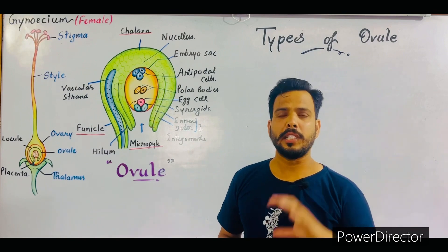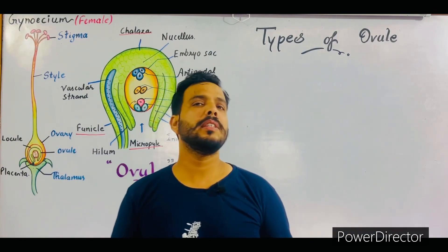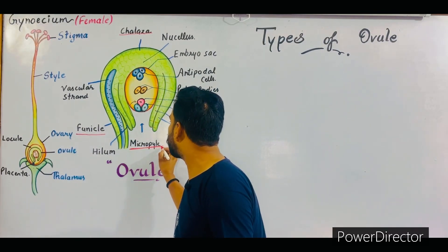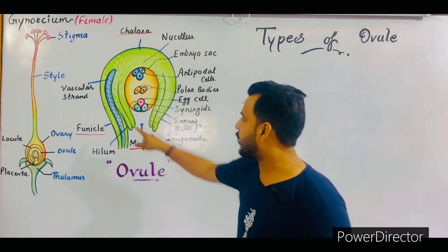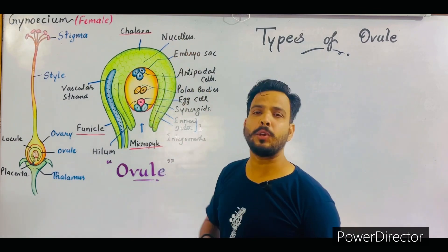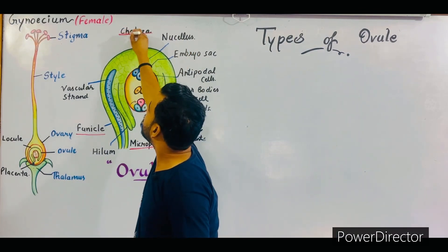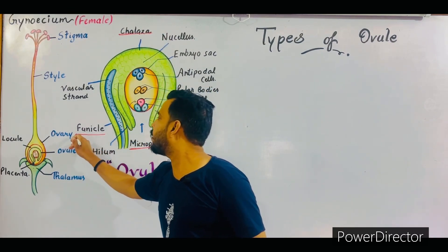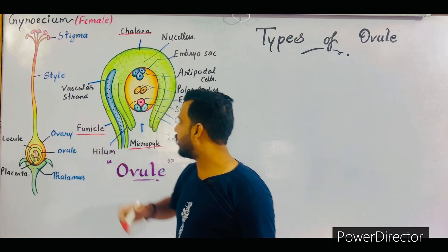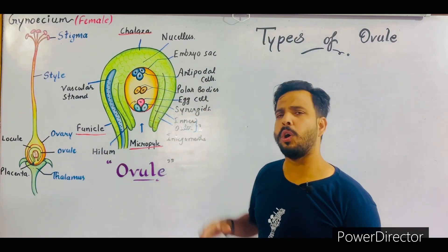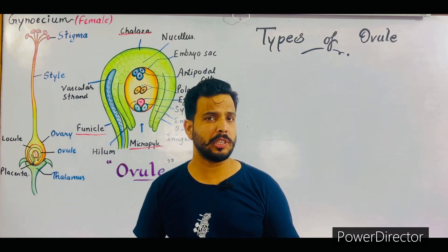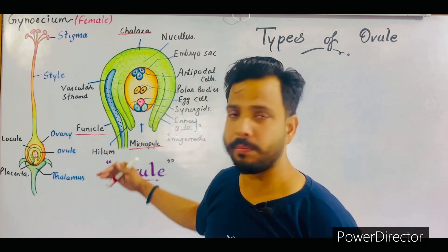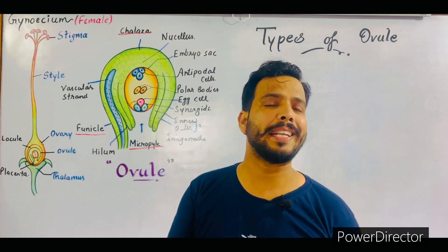Before knowing the types of ovule, it is very important to understand why ovules are of different types. There are three important parts of an ovule: the first is the micropyle, which is the opening of the ovule; at the opposite end of the micropyle, the chalaza is present; and the third part is the funicle. On the basis of the position of these three parts — funicle, chalaza, and micropyle — ovules can be categorized into six types.